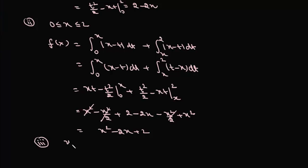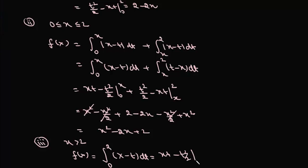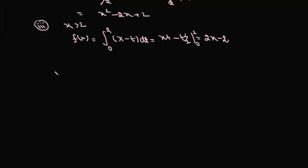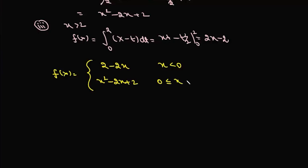For the third case, when x is greater than 2, (x - t) is always positive. So f(x) = integral from 0 to 2 of (x - t) dt = [xt - t²/2] from 0 to 2 = 2x - 2. Summarizing, the piecewise function is: f(x) = 2 - 2x for x < 0; f(x) = x² - 2x + 2 for 0 ≤ x ≤ 2; and f(x) = 2x - 2 for x > 2.